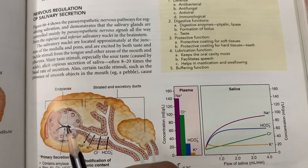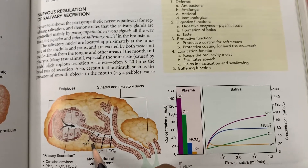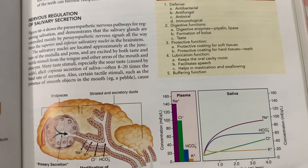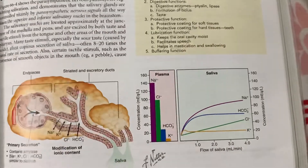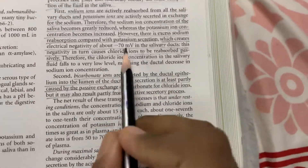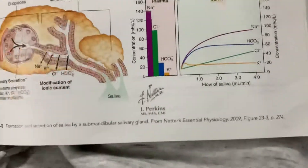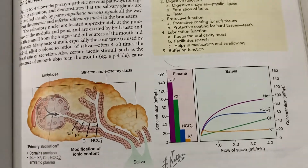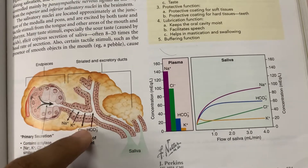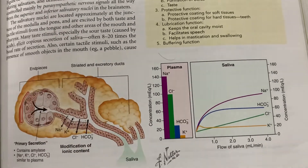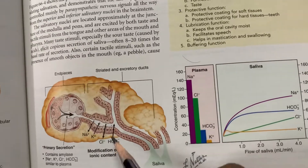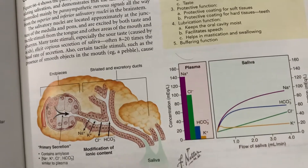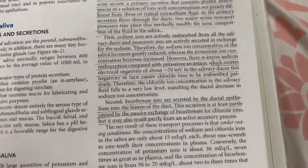The ductile cells actively reabsorb more sodium ions and secrete less potassium ions into the duct. As a result, the saliva in the duct becomes negatively charged and gets a potential of about minus 70 millivolts. Because of this excess negativity, chloride passively travels along with the sodium out of the duct. Then bicarbonate ions are secreted into the duct to compensate for the chloride efflux.